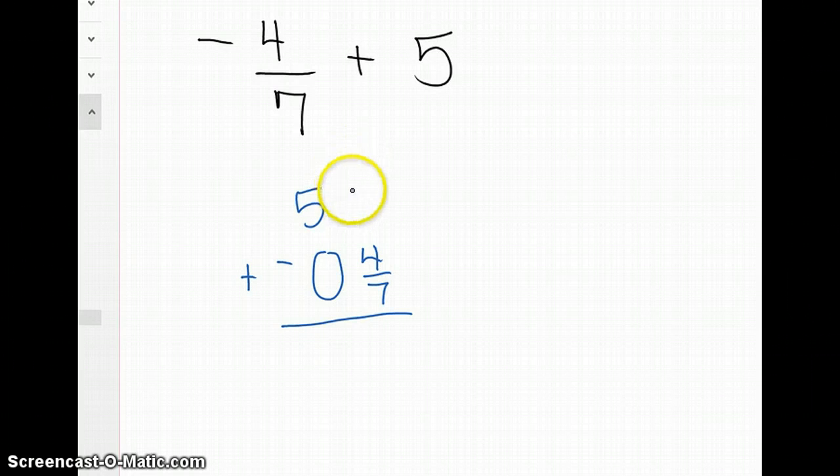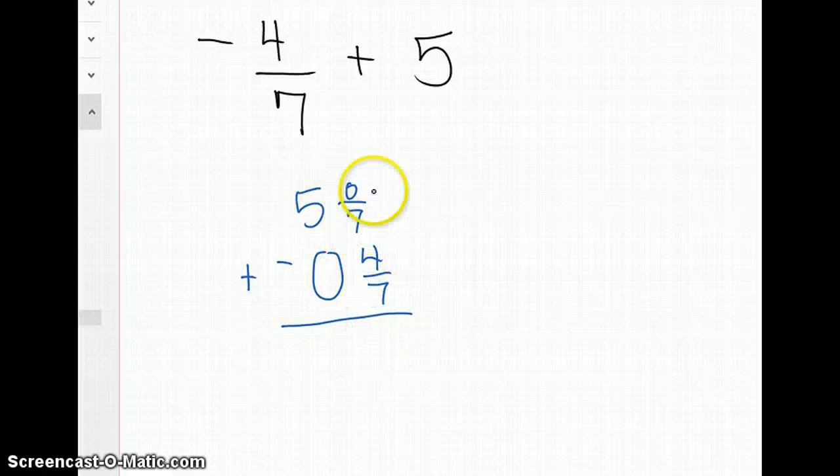Well, 5 doesn't have a fraction, so there's an understood 0 sevenths. And I'm using 7 as the denominator so that we'll have common denominators. So since there's no fraction, I can write the fraction as 0 sevenths. Well, I'm going to have to borrow here.